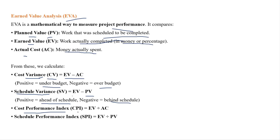Cost Performance Index (CPI) = EV divided by AC. Schedule Performance Index (SPI) = EV divided by PV. If the result is less than 1, it means poor cost efficiency or behind schedule. If positive (greater than 1), you are within budget or ahead of schedule. These indices help measure project performance clearly.